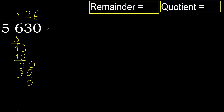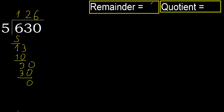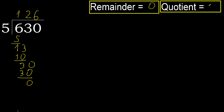Next: that is not a number, therefore finish it. 630 divided by 5 is 126.